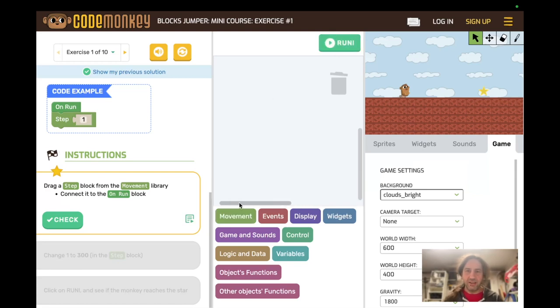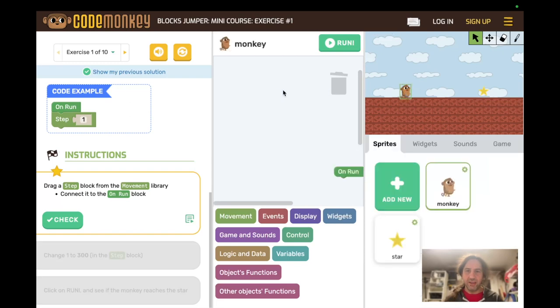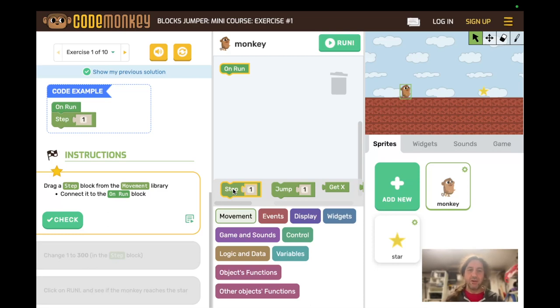We just lost the fact that we were stuck on a monkey so let's click the monkey and now we have this says that we're programming the monkey basically. We have our on run block and we are going to drag a step block from the movement library. Click on movement and drag the step block up. So some students might not be familiar with using a trackpad in the first place or with clicking and especially with dragging and scrolling can be very difficult. So it can be good to walk through the first exercise or chunk of the first exercise and then let them do it themselves.